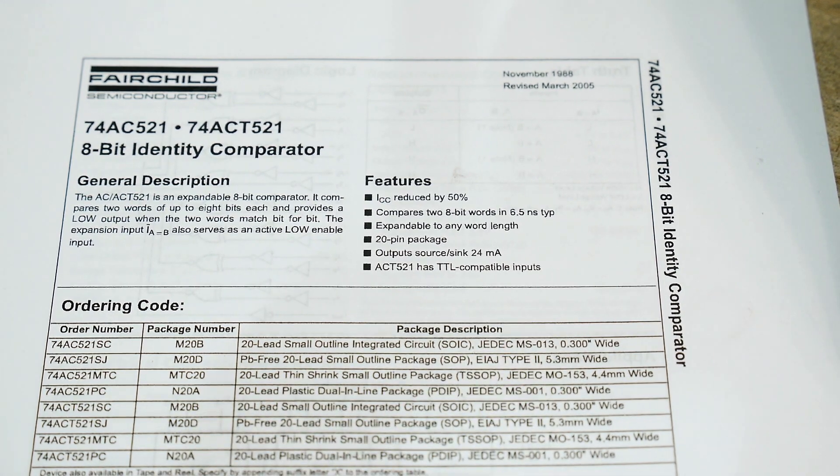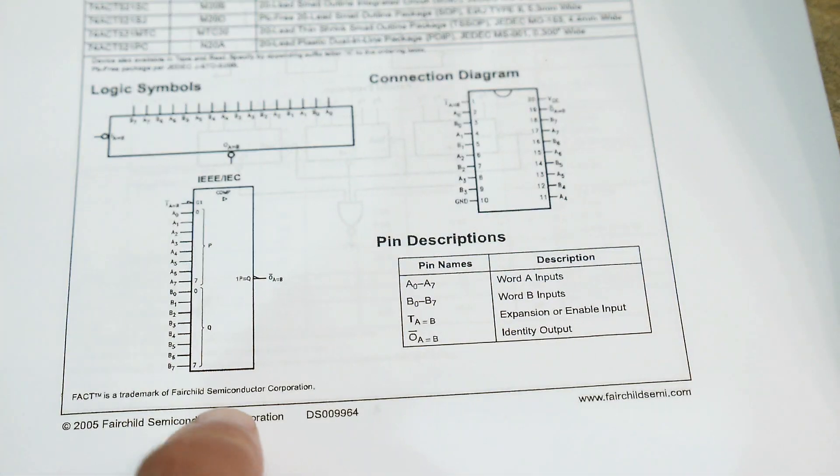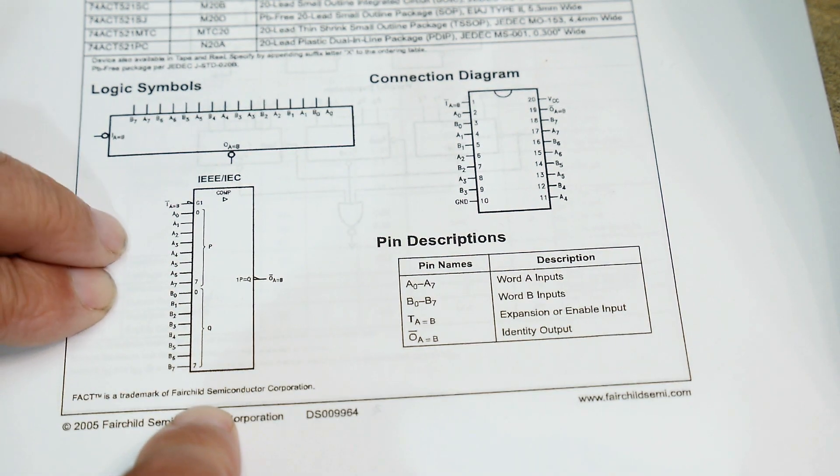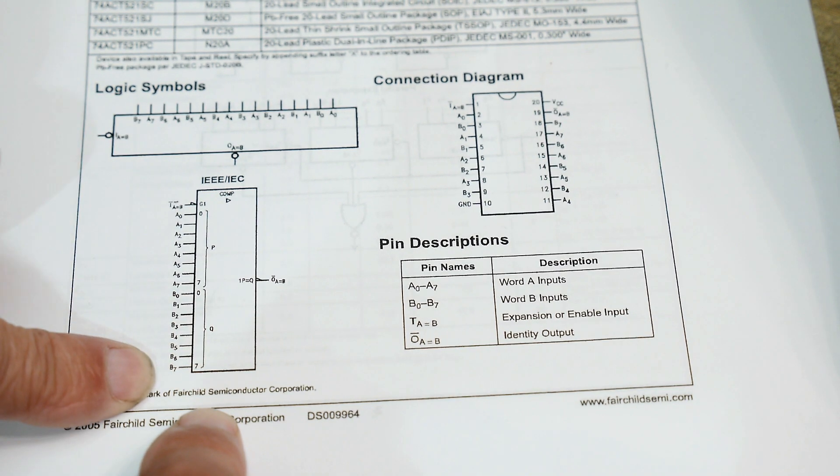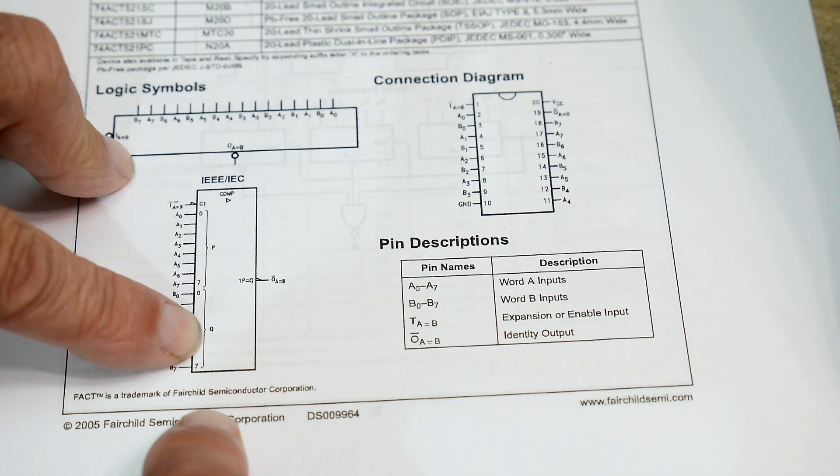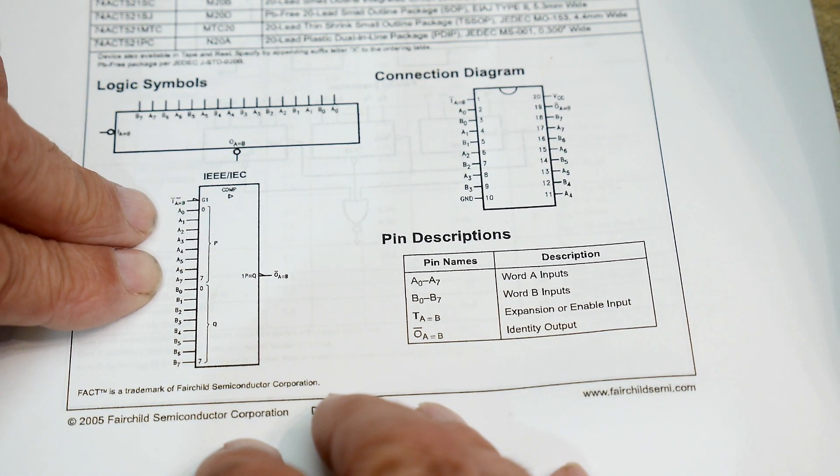It has a P register and a Q register, so A's and B's. I don't know why there wasn't an A register and B register, but whatever. You put in the A's and you put in the B's and it compares them.